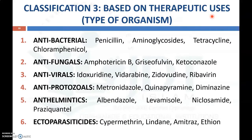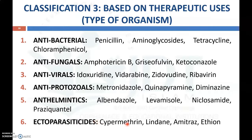The third classification is based on therapeutic uses or the type of microorganism killed. It may be antibacterial like penicillins, aminoglycosides, tetracycline, and chloramphenicol; antifungal like amphotericin B, griseofulvin, or ketoconazole; antiviral like idoxuridine, vidarabine, zidovudine, and ribavirin; antiprotozoal like metronidazole, quinapyramine, and diminazine; anthelmintics like albendazole, levamisole, niclosamide, and praziquantel; and ectoparasiticides like cypermethrin, lindane, amitraz, and ethion.